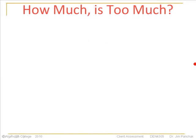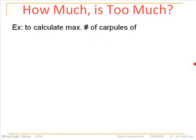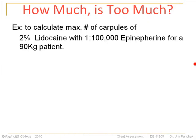I'm going to give you an example of how to calculate maximum dosages of drugs. The example we'll use is for local anesthetic. Let's say you have to calculate the maximum number of carpules that you can give to a 90 kg patient, and the anesthetic you're going to use is 2% lidocaine with 1 to 100,000 epinephrine.